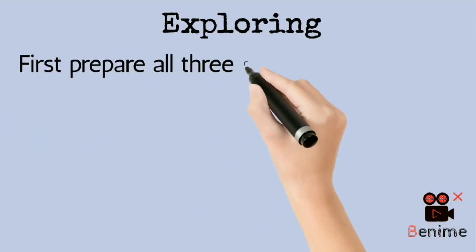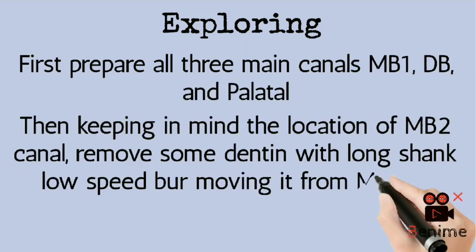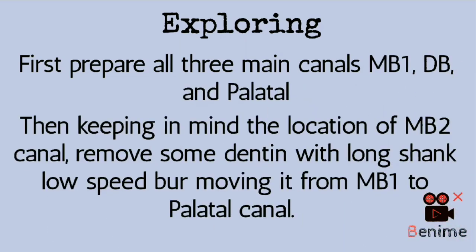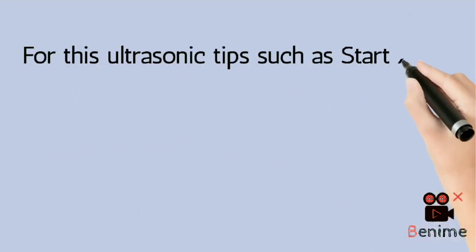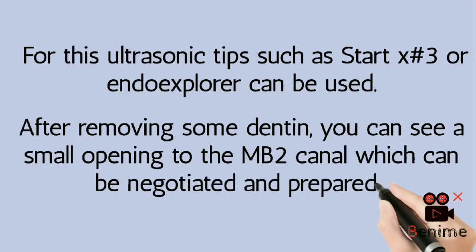The last part of the video is exploring. It is always recommended to prepare all three main canals first — MB1, distobuccal, and palatal. After you finish preparing all three, then start with MB2. Keep in mind the location of MB2 and remove some dentine with a long shank low-speed bur from MB1 to the palatal canal. Other than a low-speed bur, you can also use ultrasonic tips and an endo explorer. In a few moments, you will see a small opening to the MB2 canal, which you can negotiate and prepare.